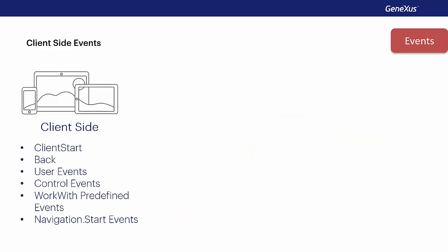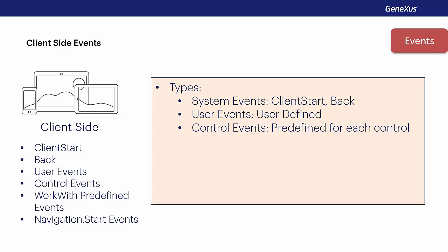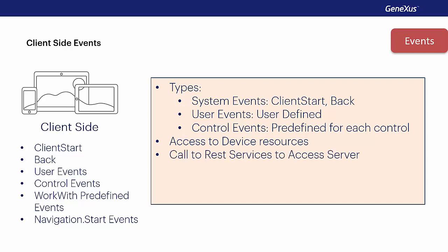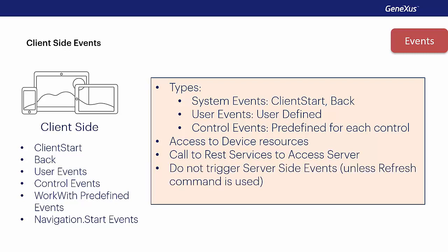Events on the client side are the application's response to user interaction. There are three types of client events: system events, user events, and control events. As opposed to the start, refresh, and load events executed fully on the server, events on the client side have access to all resources on our device. The code associated with these events is executed on the device, unless there's a need to access the server, such as when a procedure is to be invoked, in which case the process is always executed on the server by means of an invocation to a REST service — all completely transparent for the developer. During the execution of a client-side event, the system's events are not executed unless explicitly required through the refresh command. These events also have a specific grammar different from server-side events, which we'll cover in detail in another video.